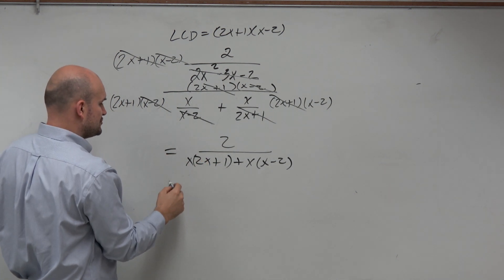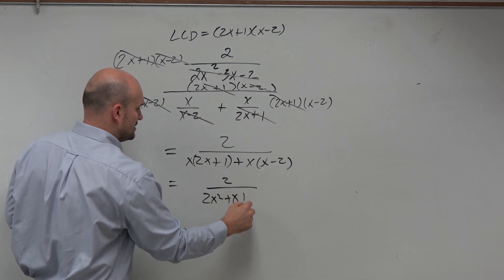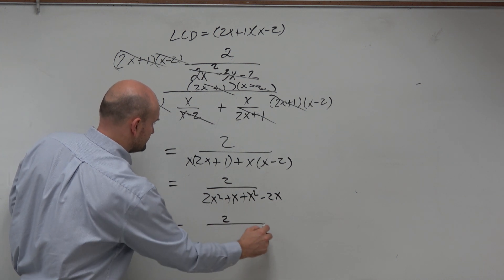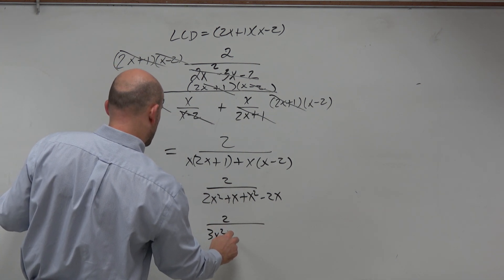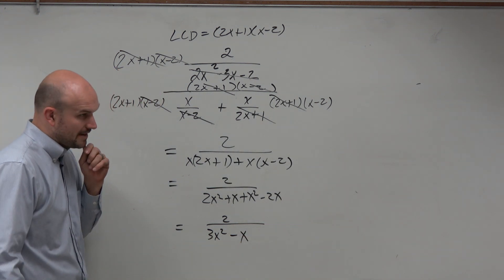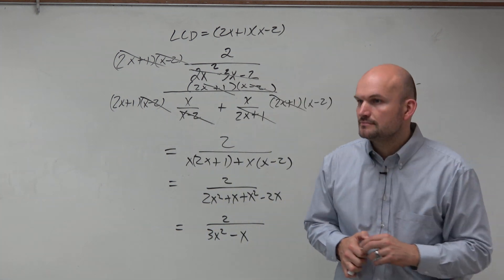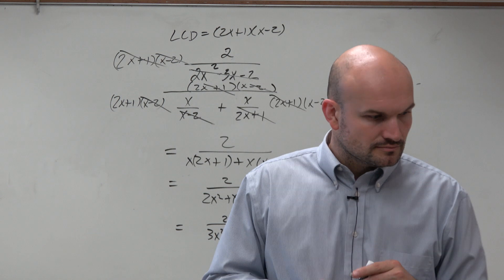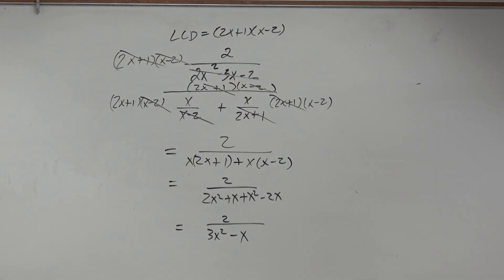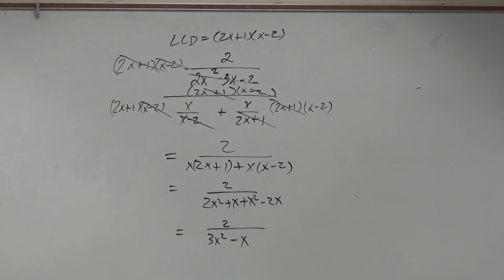And then now, I just distribute the denominator. So 2x squared plus x plus x squared minus 2x. And therefore, this gives me 3x squared minus x. And we'll talk about the excluded values next class period. I mean, it's the same thing. There's just one more step that we could do with the way that I teach. It's easier to do it after we've gone through another lesson.